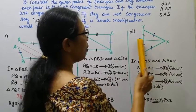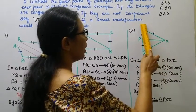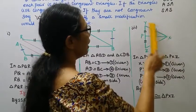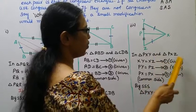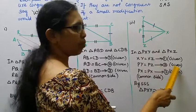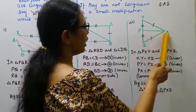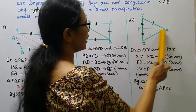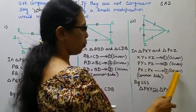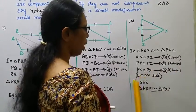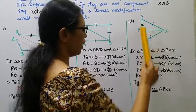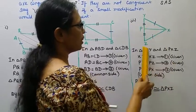Here are two triangles: PXY and PXZ. XY is equal to XZ — that is the first given point. PY is equal to PZ — that is the second given point. PX is common to both triangles, so PX equals PX — that is the third point, the common side. By side-side-side, triangle PXY is congruent to triangle PXZ.